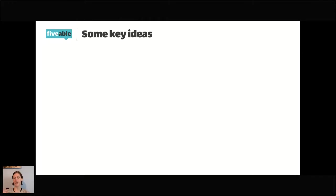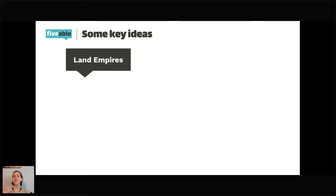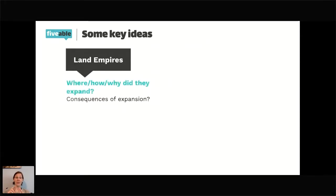Some key ideas and big topics I'll flesh out with detail tonight. I'll talk about land empires — what the College Board means by that term. As Mr. Beckman likes to point out, land empires sometimes had sophisticated navies, but their territory was largely connected by land. We want to know where they were, how and why they expanded, because this early modern era is an era of imperial expansion, as well as the consequences of that expansion.